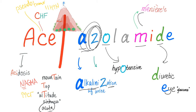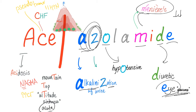M, because it's used in Meniere's disease to decrease the pressure in your labyrinth, a.k.a. the inner ear. E, because it's used for eye drops for glaucoma, to decrease the intraocular pressure, IOP.